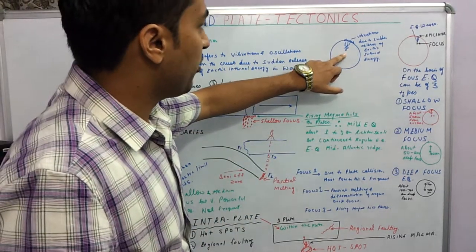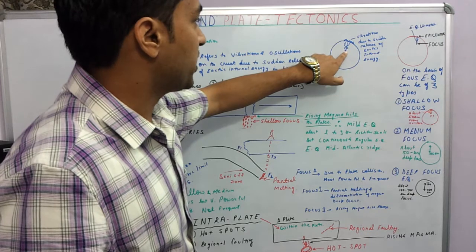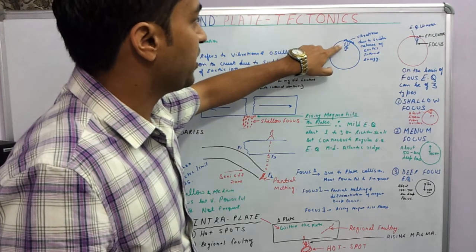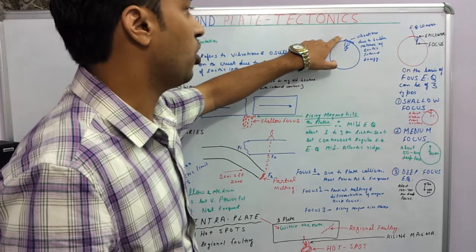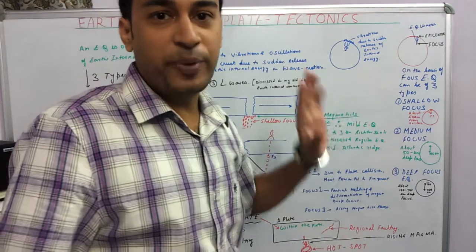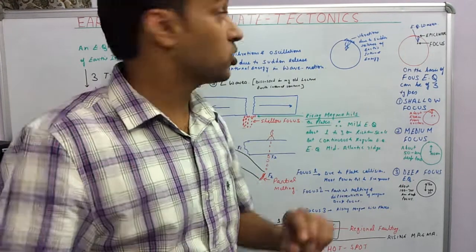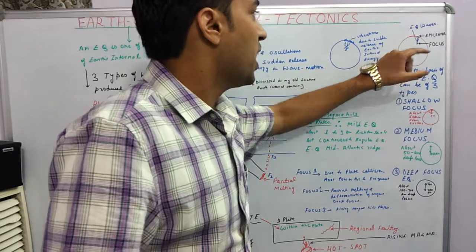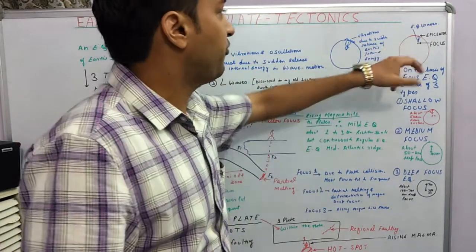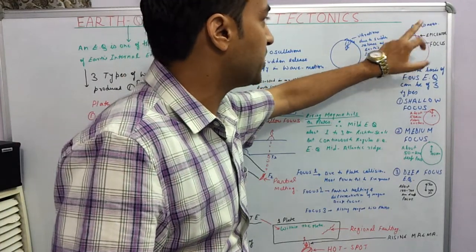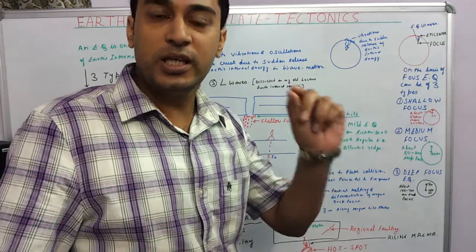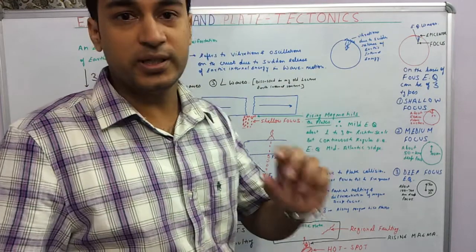Here we can see in the diagram that a certain earthquake occurred at this focus and energy moved up in the form of waves and vibrations occurred on the Earth's surface. Now the place where the earthquake occurs is called the focus, and the place immediately above the focus on the Earth's surface is called the epicenter. Epicenter is the place where the earthquake is first experienced on the Earth's surface.